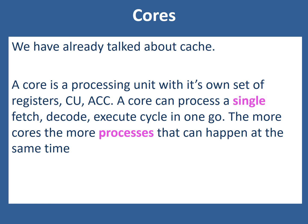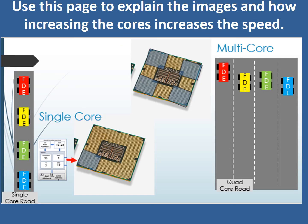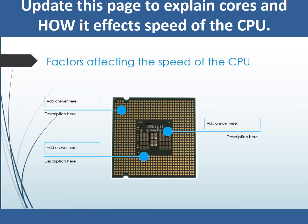Here is the answer you should have filled in your workbook. A core is a processing unit with its own set of registers, CU and ACC. A core can process a single fetch, decode and execute cycle in one go, and the more cores, the more processes that can happen at the same time. Go and use the pictures as analogies to help explain them, and make sure you explain how cores actually affect the speed of the CPU.